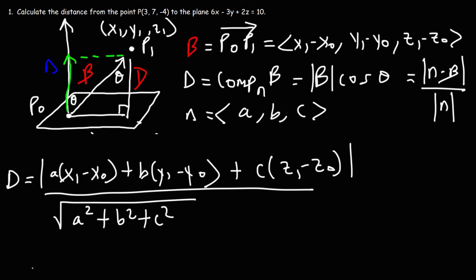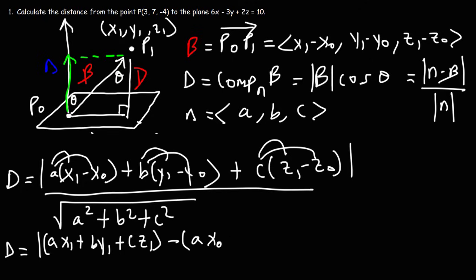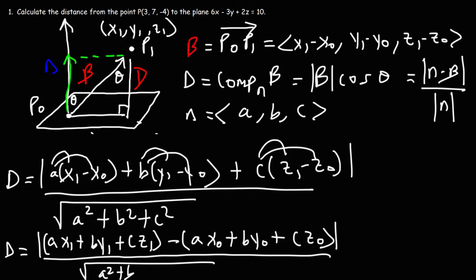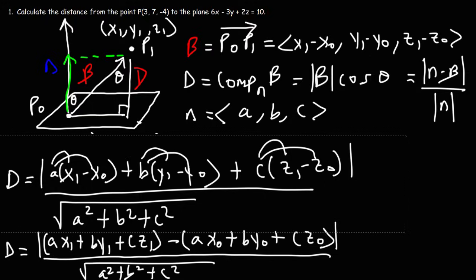Now let's do some algebra. So let's distribute A to X1, B to Y1, C to Z1. So I'm going to get AX1 plus BY1 plus CZ1. I'm going to group these together. Next, I'm going to multiply A by negative X0, B by negative Y0, and C by negative Z0. All of these terms will be negative, so I'm going to take out a negative sign, and it's going to be AX0 plus BY0 plus CZ0, divided by the same stuff.